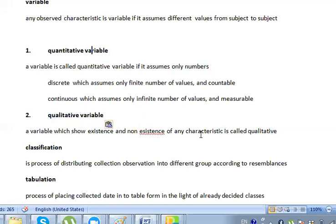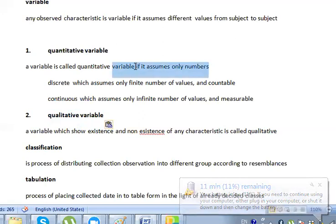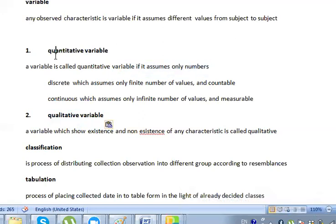A variable is called quantitative variable if it assumes only numbers. If it is in numbers, it is numerical, it is quantitative. And if it is characteristics, what will it say? Qualitative.